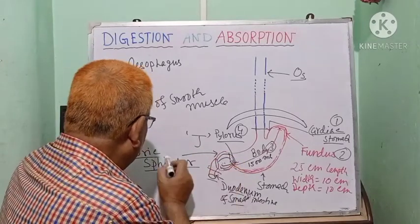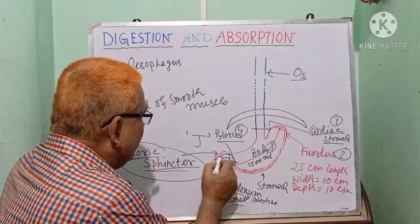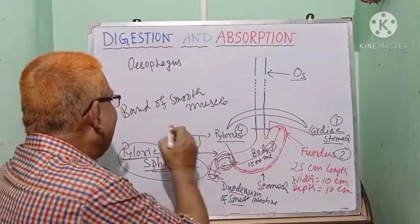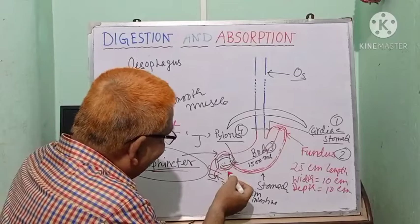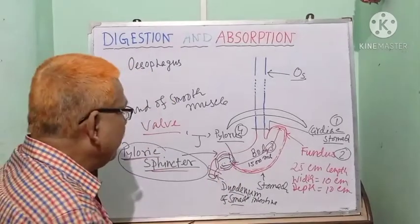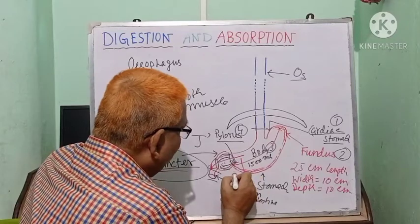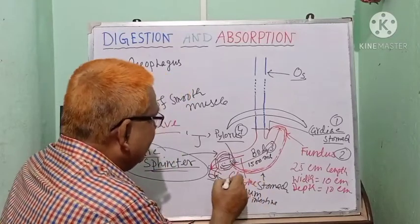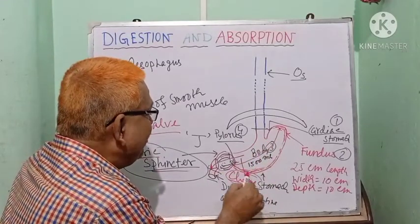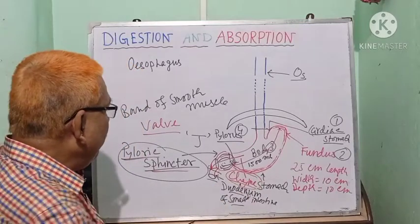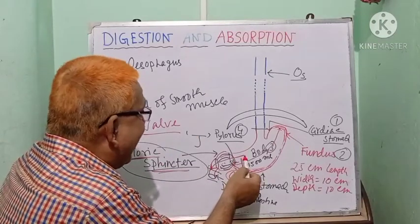The function of the pyloric sphincter is that it acts as a valve — a gateway. It allows chyme to enter into the duodenum. Chyme (C-H-Y-M-E) is the partly digested food material within the stomach.